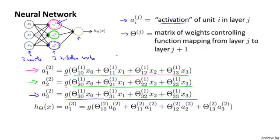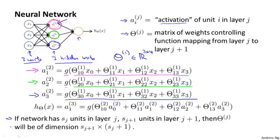So here we have three input units and three hidden units. And so the dimension of theta one, which is the matrix of parameters governing our mapping from our three input units to our three hidden units, theta one is going to be a three by four dimensional matrix. And more generally, if a network has sj units in layer j and sj plus one units in layer j plus one, then the matrix theta j, which governs the function mapping from layer j to layer j plus one, that will have dimension sj plus one by sj plus one.